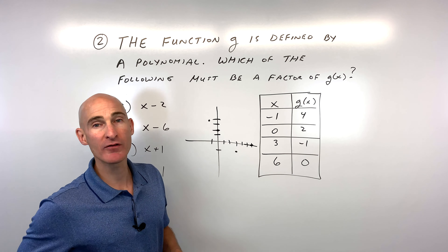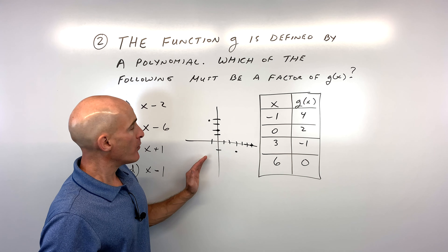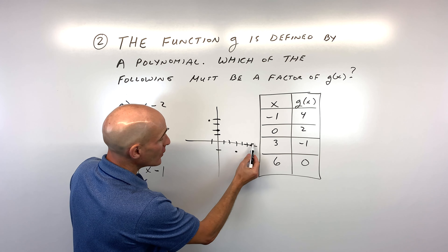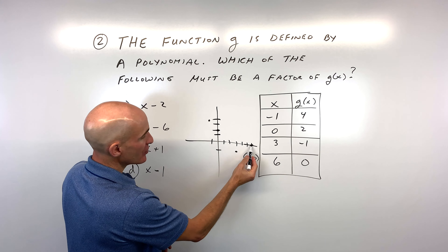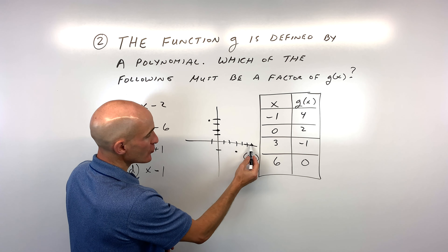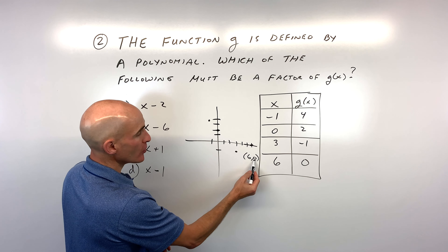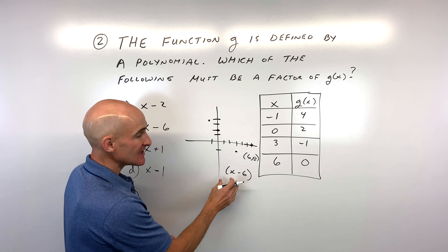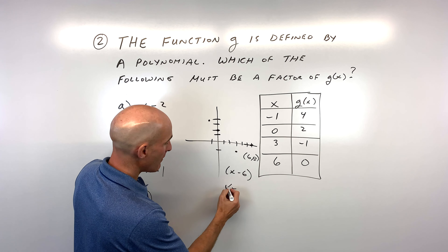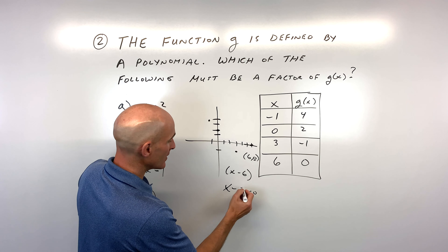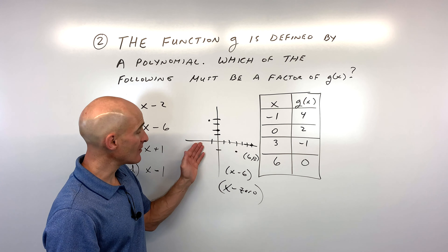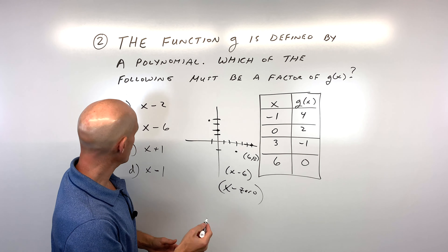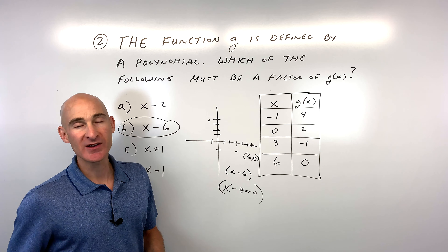When you talk about zeros, the y-coordinate is zero. See how six comma zero has a y-value of zero — that tells us six is a zero, and x minus six is a factor. Remember: x minus whatever the zero is equals a factor. If it were a negative number, the two negatives would cancel to give a positive. So for this one, letter B is your best answer.